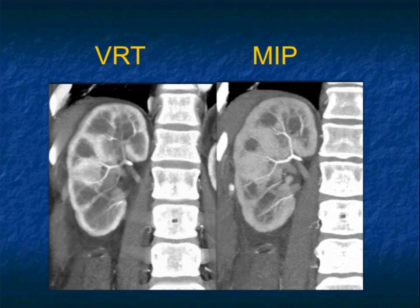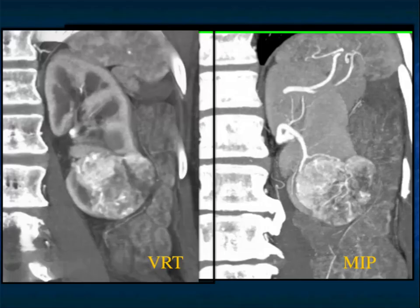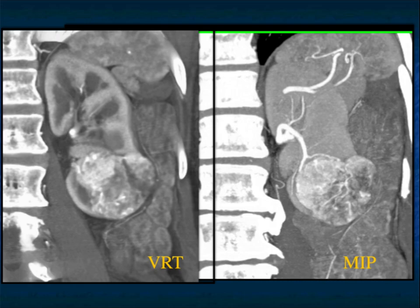Here's a good example of volume rendering and MIP showing the cortical medullary interface and the arterial map. In this case you can see a mass on both volume rendering and MIP — it's very vascular with AV shunting, a clear cell renal cell carcinoma. You also see the branching of the renal arteries to the lower pole and the neovascularity. If you were thinking of doing a partial nephrectomy, you can plan from these images.